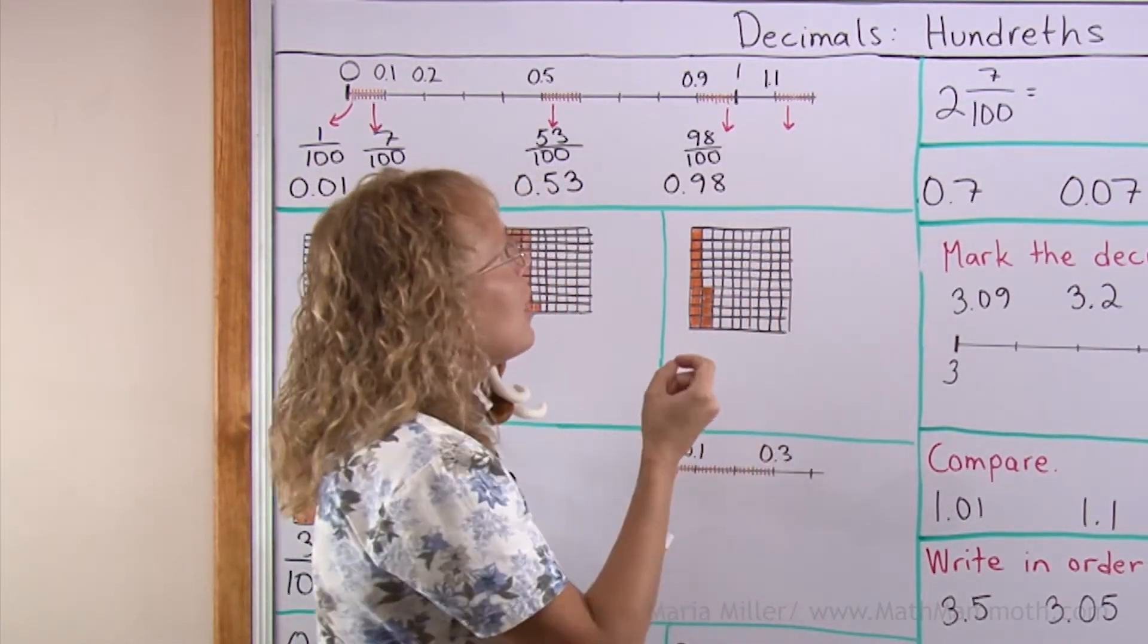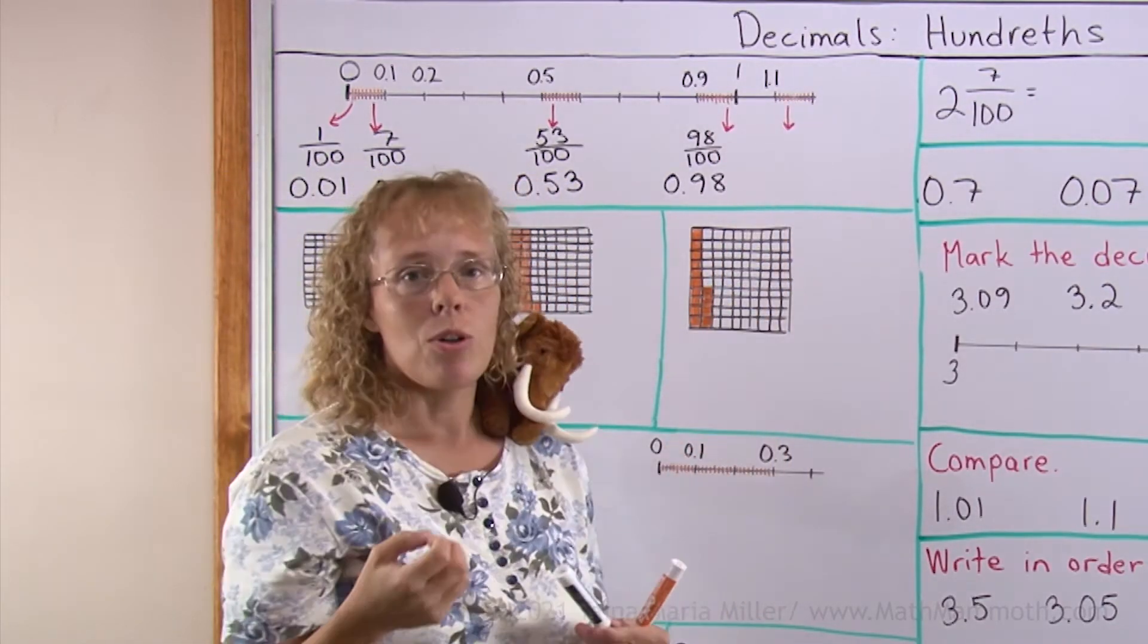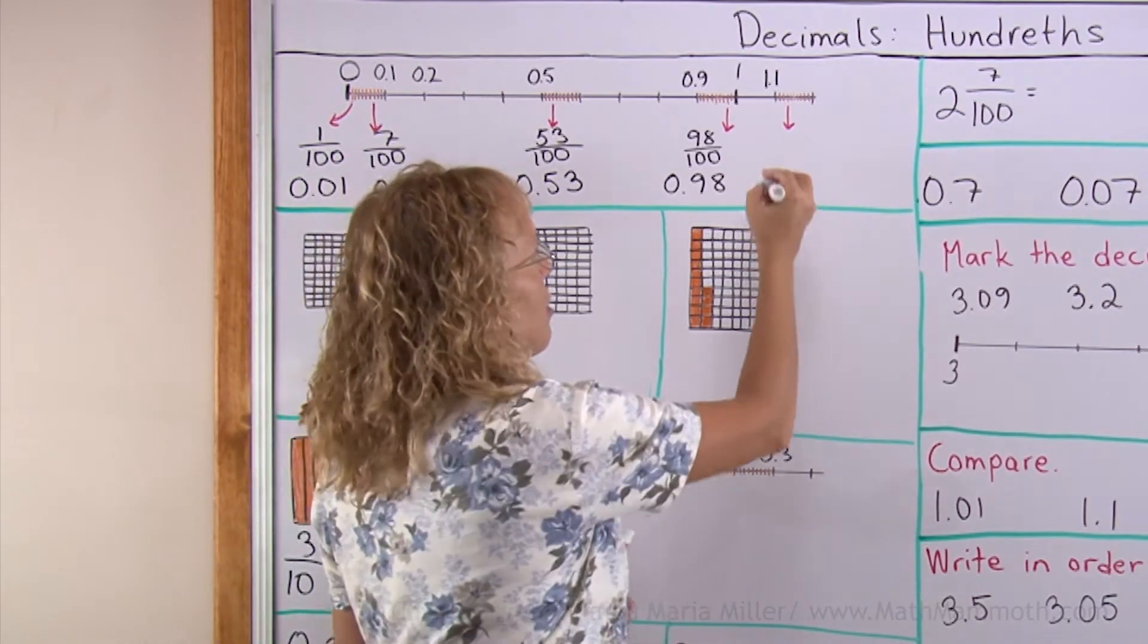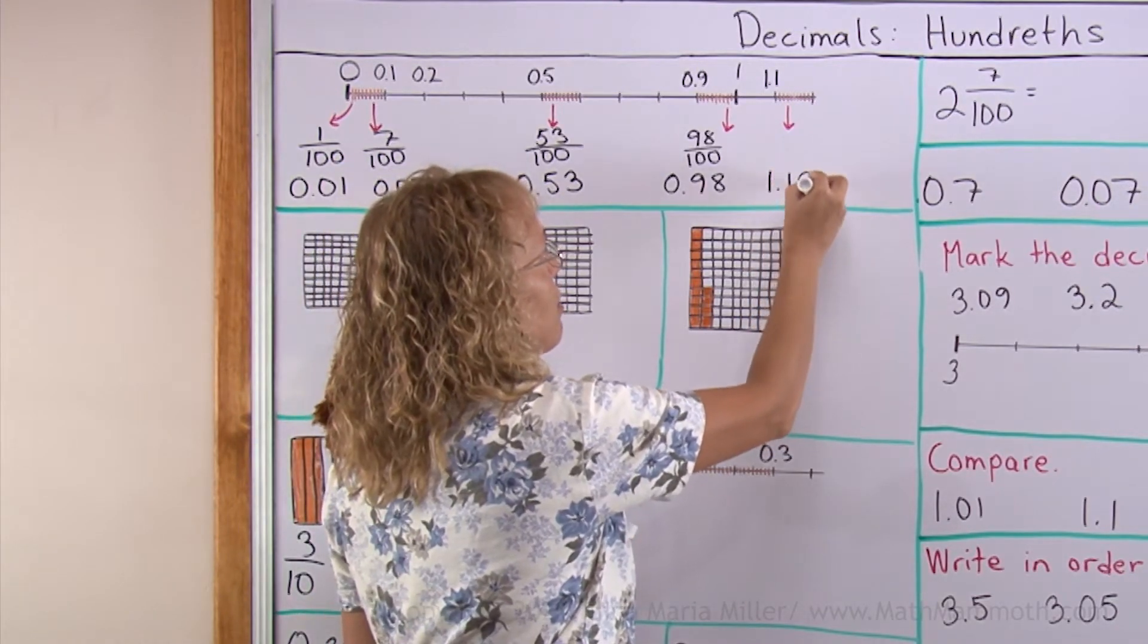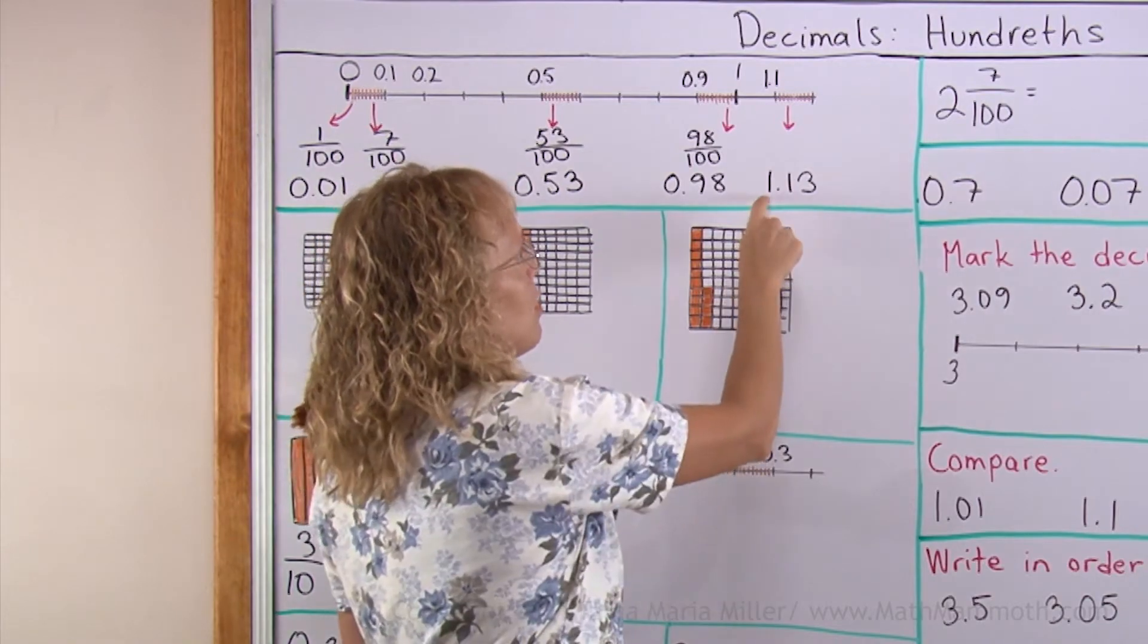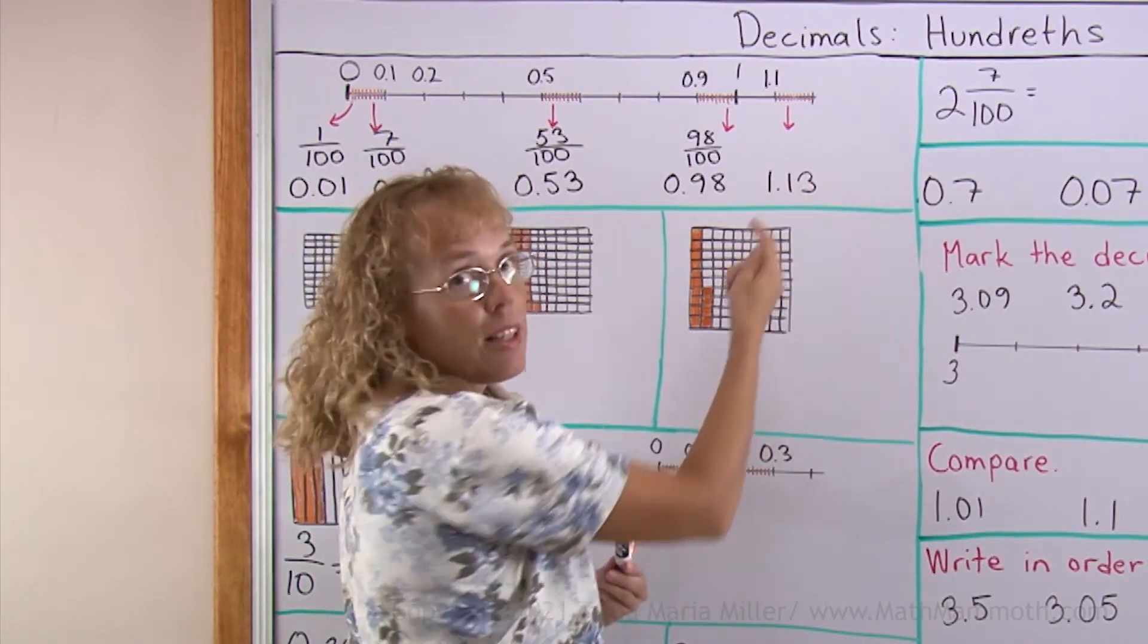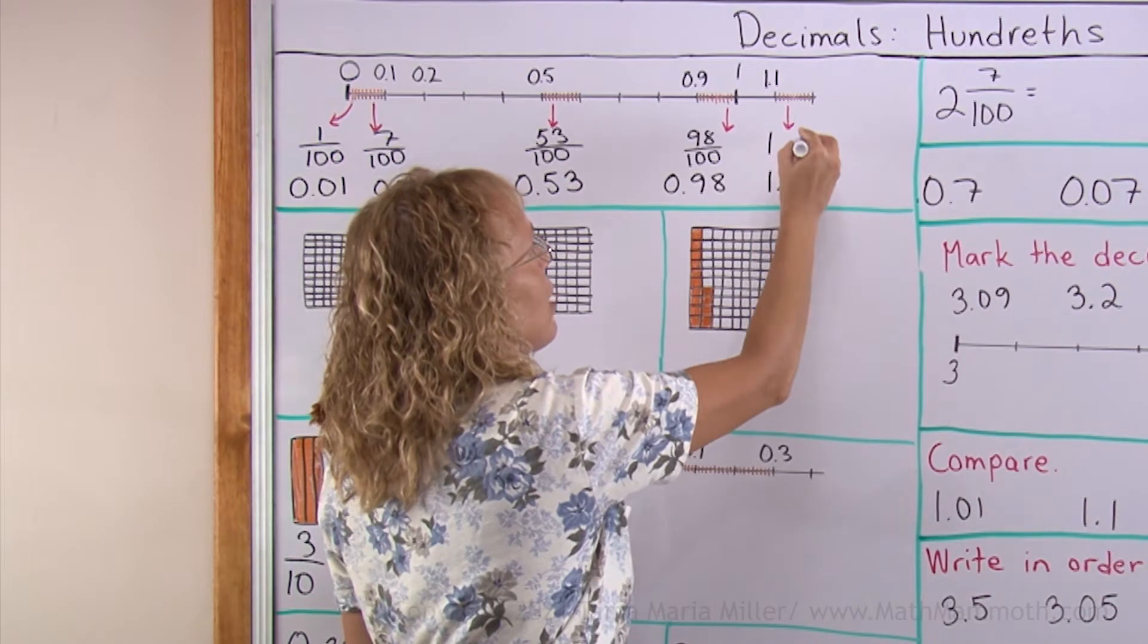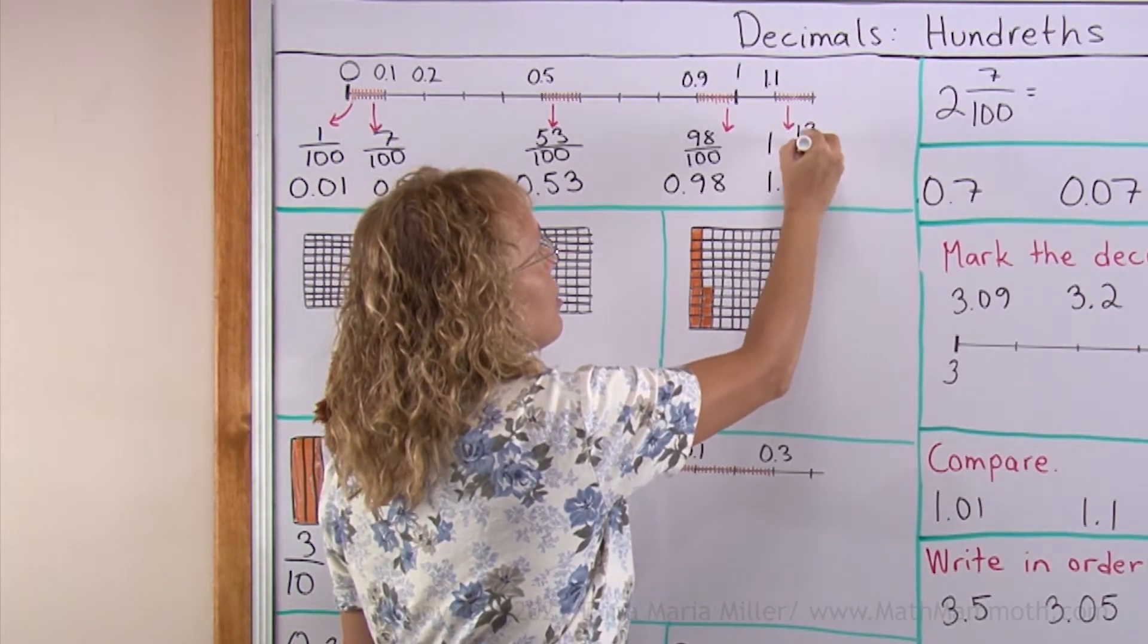Now here, I am 3 lines beyond 1.1. So the decimal will be 1.13. There's 1, 1 tenth and 3 hundredths. As a fraction or mixed number I would write 1 and 13 hundredths.